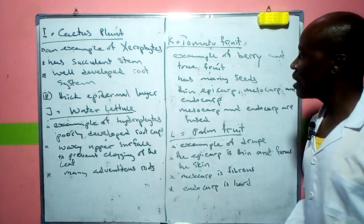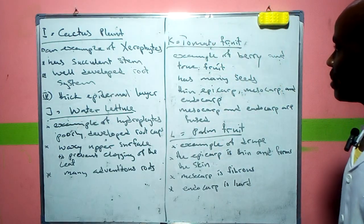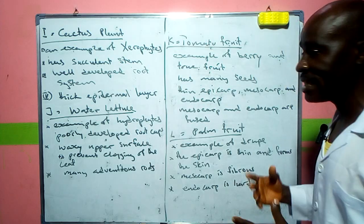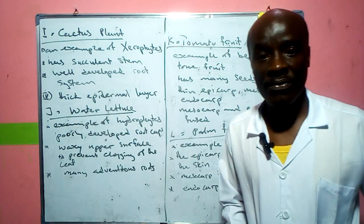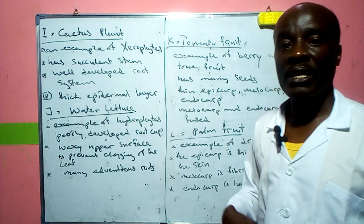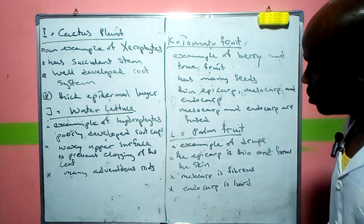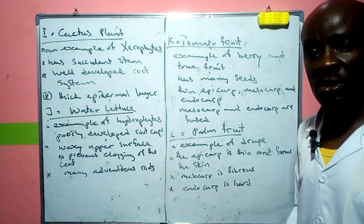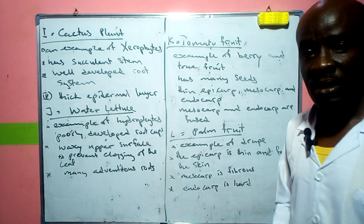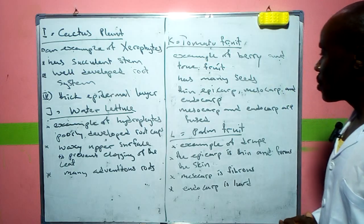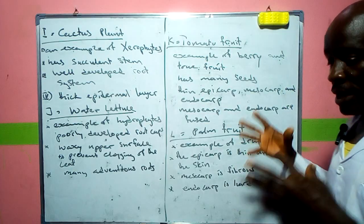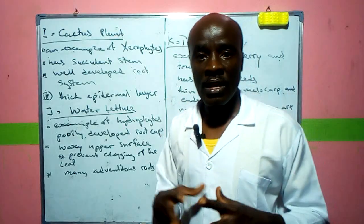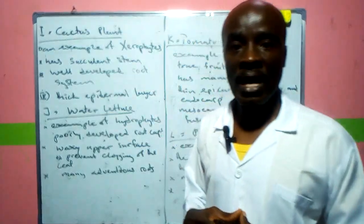Specimen K is a tomato fruit. The tomato fruit is an example of a berry and is a true fruit. The epicarp, mesocarp, and endocarp are all thin, and the mesocarp and endocarp are fused together. Inside, there are many seeds.